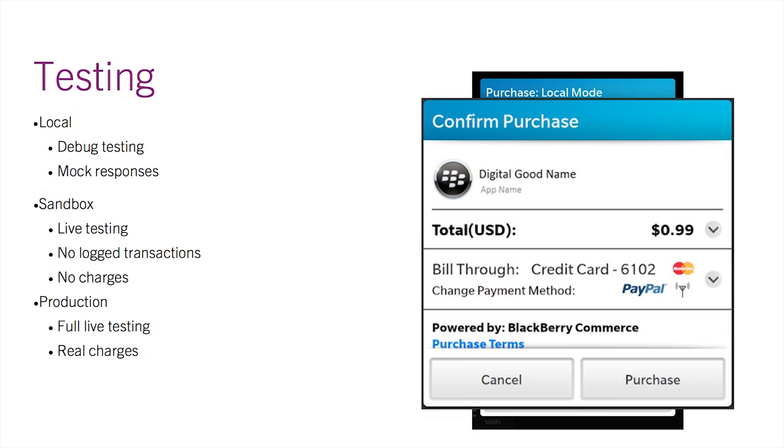The second is that sandbox users will not get charged. Finally, there's production mode testing. In this mode, the app would need to be public and downloaded through BlackBerry World. All purchases while the app is in production mode will actually get billed and transactions are recorded in the database, giving you 100% accurate results.